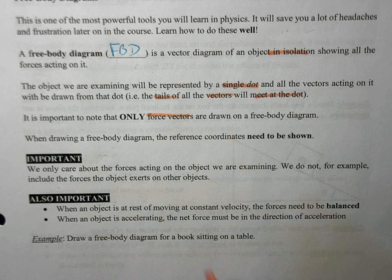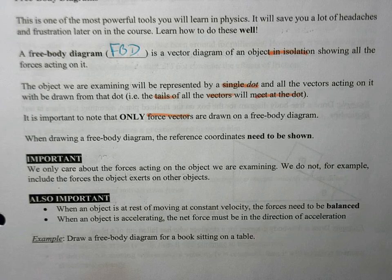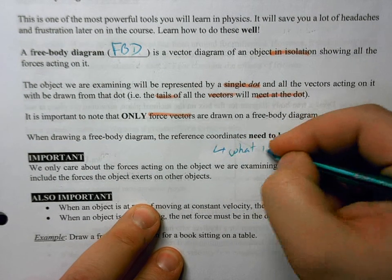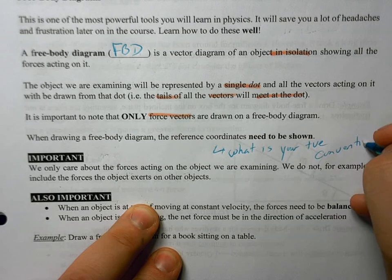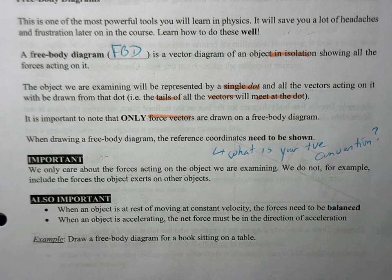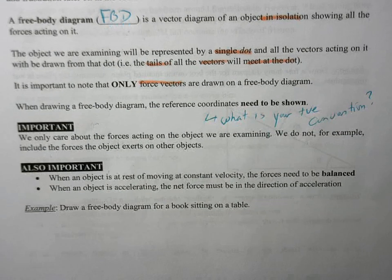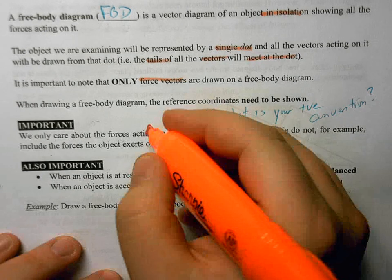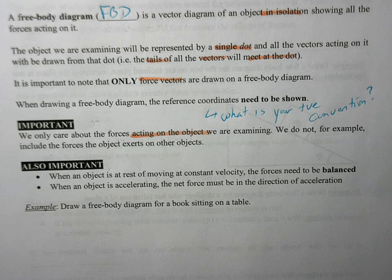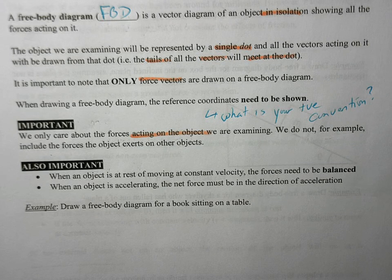When you're drawing an FBD, reference coordinates need to be shown. You want to tell us what your positive convention is — are you calling east positive, north positive, southwest positive? You want to tell us what is positive. There are important points when looking at free body diagrams: we only care about forces that are acting on that object. We don't care about forces that that object exerts on others. We only care about the forces explicitly acting on it. That is the power of the free body diagram.